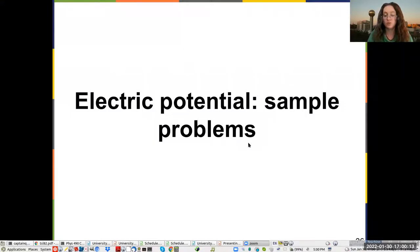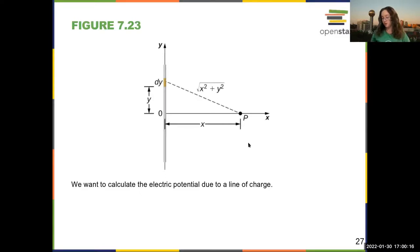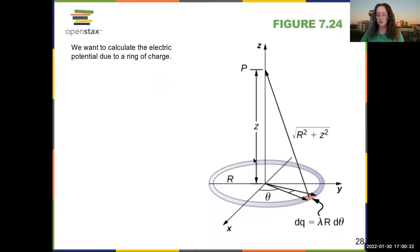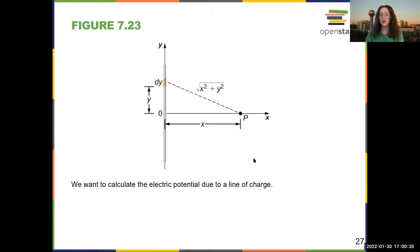All right, so now we're going to go through a few sample problems. We are going to calculate the potential due to a line charge. And just like when we were calculating electric fields, we are going to find a small piece of charge, dQ. And here, we're going to say that the total charge is Q, and that our line charge has length L. So then, a small piece of charge, dQ, is just Q over L, dY.